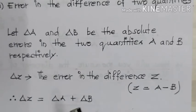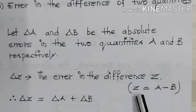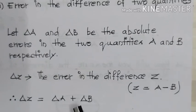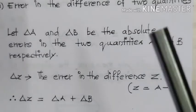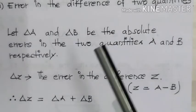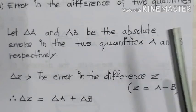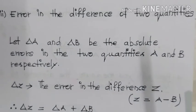You shouldn't get confused. Here it is written A minus B, so we may think we get delta A minus delta B, but that is not the case. For both sum and difference of two quantities, the expressions are one and the same.